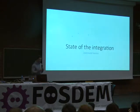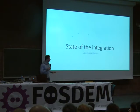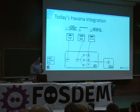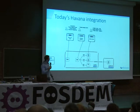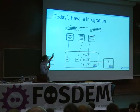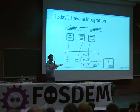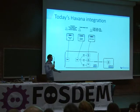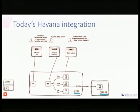Now let's jump into the state of the integration. The current release of OpenStack is Havana. Nova is the compute part — responsible for running and booting virtual machines and allocating resources. Glance is the image store — the catalog that stores all images. Cinder is responsible for block devices — you create block devices and attach them to virtual machines.